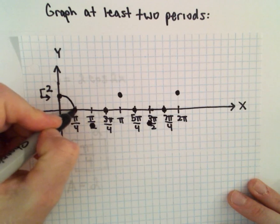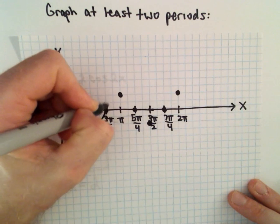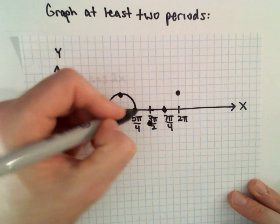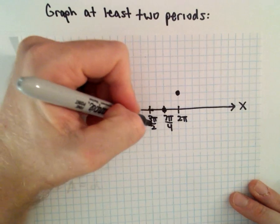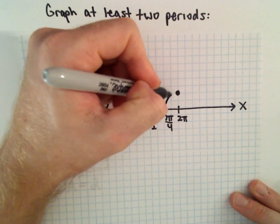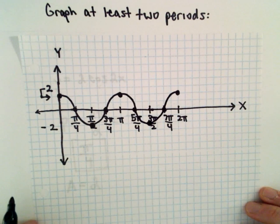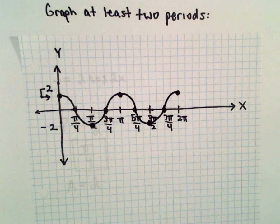So let me connect them with some curvy curves. And that'll be a rough little sketch of y equals 2 times cosine of 2x.